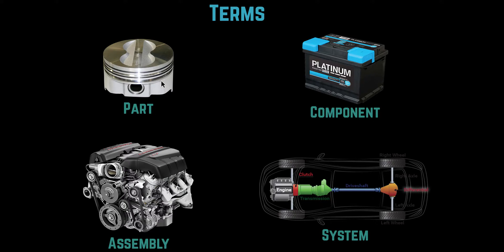Right here we have a part, and this is the smallest removable item in a car that can't be disassembled. For instance, this is a piston head, and the piston head can't be broken down any further unless you wanted to melt it, of course.